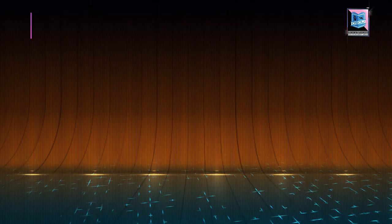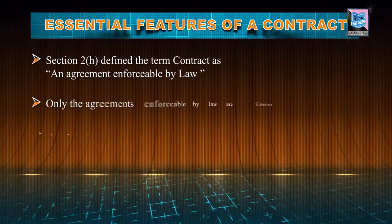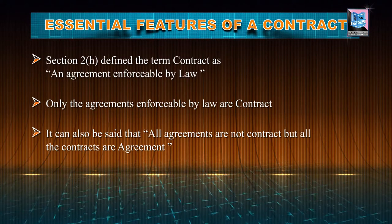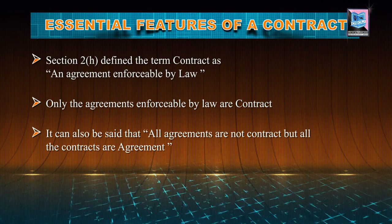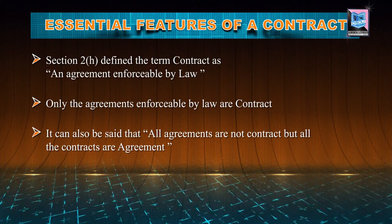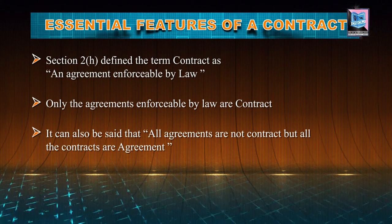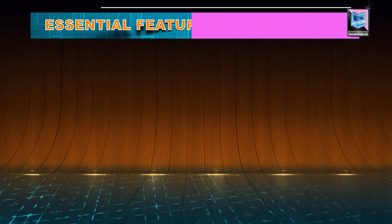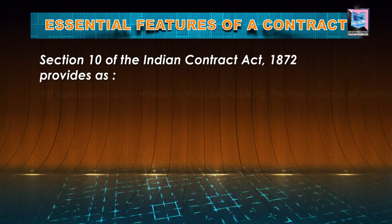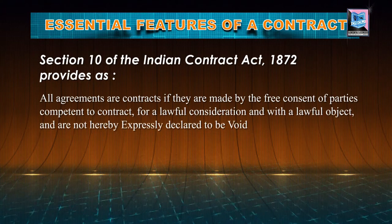Starting from the essential features of a contract, as already discussed in Section 2, Clause H, the term contract has been defined. It is defined as: a contract is an agreement enforceable by law. So only the agreements which are enforceable by law are contracts. It can also be said that all agreements are not contracts, but all contracts are agreements. The essential features of the contract are provided by Section 10 of Indian Contract Act 1872.